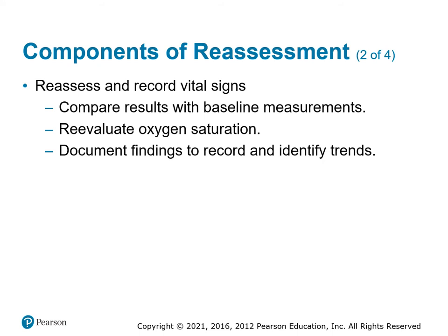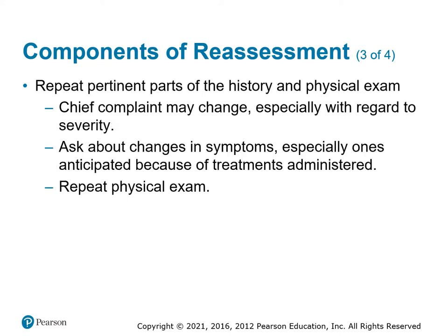When you reassess vital signs, you need to keep documenting what you get. After three readings, you can establish a trend, so document multiple vital signs. With our cardiac monitors, we can set them to reassess blood pressure every five minutes or less — that'll give you a warning every time. Get a pulse, get the pulse oximetry, and reassess all your vital signs. Recheck the pertinent parts of your history; maybe there was a memory change or they thought of something else that might help your assessment.